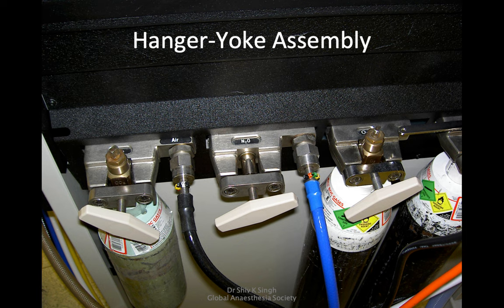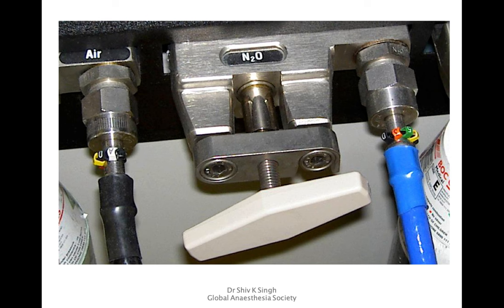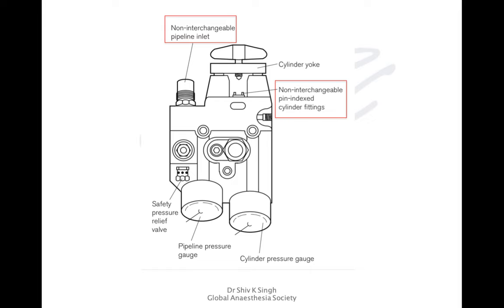The nitrous oxide cylinder has been blanked off using the blanking plug. Oxygen cylinders are also visible. On older machines you may also see a carbon dioxide cylinder, which is no longer seen on modern machines. Cylinders are attached to the machine using the cylinder yoke block assembly with the Pin Index Safety System (PISS). From the pipeline, Non-Interchangeable Screw Threads (NIST) are used at the pipeline inlet.